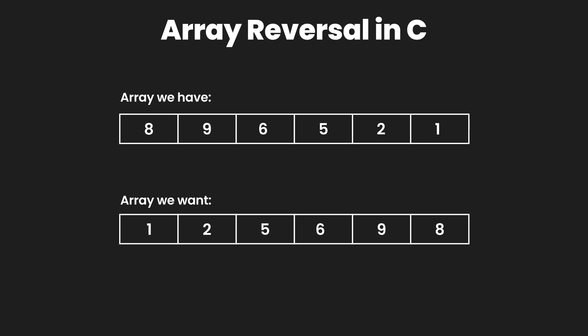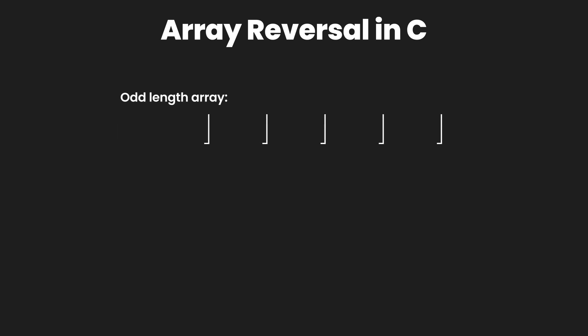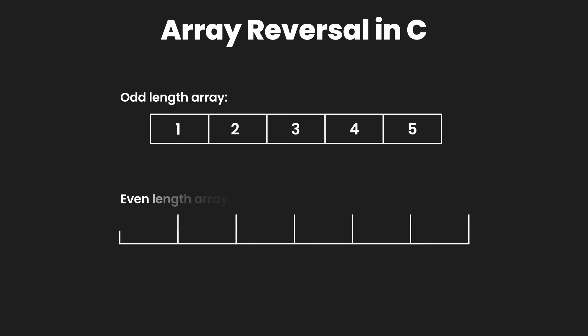So what is the logic or algorithm that we are going to use here? We are simply going to use a swapping algorithm. We have two cases: one where we have an array with odd length, and the second when we have an array of even length.